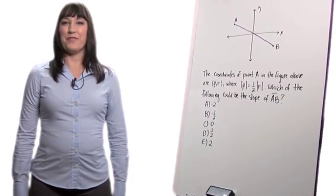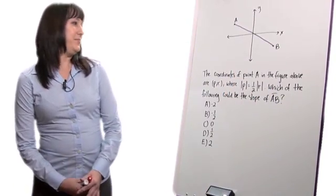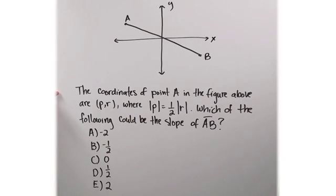Let's look at this problem involving linear functions. The coordinates of point A in the figure above are p,r, where the absolute value of p equals one-half the absolute value of r.